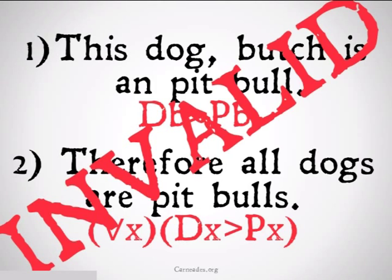We're also going to have a couple more caveats on universal generalization when dealing with conditional and indirect proofs, as well as overlapping quantifiers. We won't get into those stipulations yet, as it would be confusing before we have an understanding of how they work with predicate calculus.